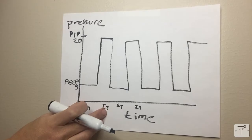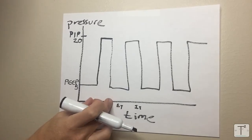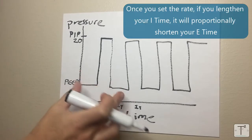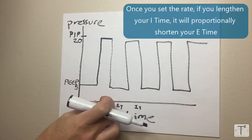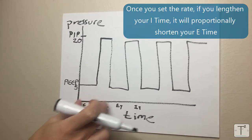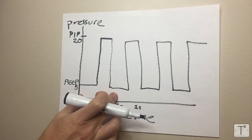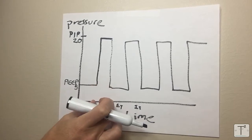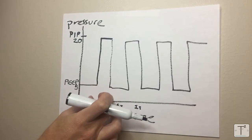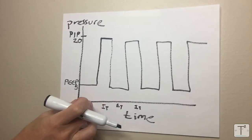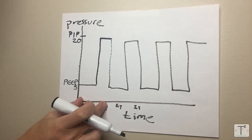One of the parameters that you type into the vent is the I time. If you also set the rate then the longer you make your I time the shorter your E time. So if each breath lasts a total of two seconds and your I time is 0.4 seconds as opposed to 0.3 seconds then your E time is going to be proportionately shorter.